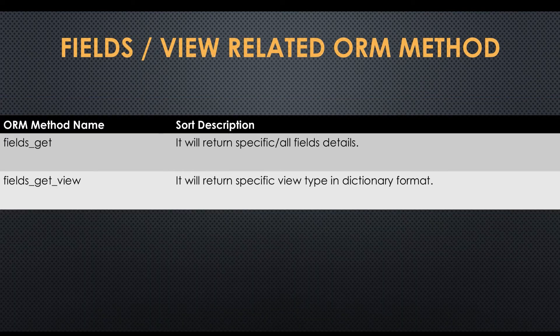In this screen you can see field-related methods. The first one is fields_get — this method will help to get information about specific fields. The second method is fields_get_view — this method will help to get the architecture of views in dictionary format, so the user can override fields and based on the final changes it will be shown on the front-end side.